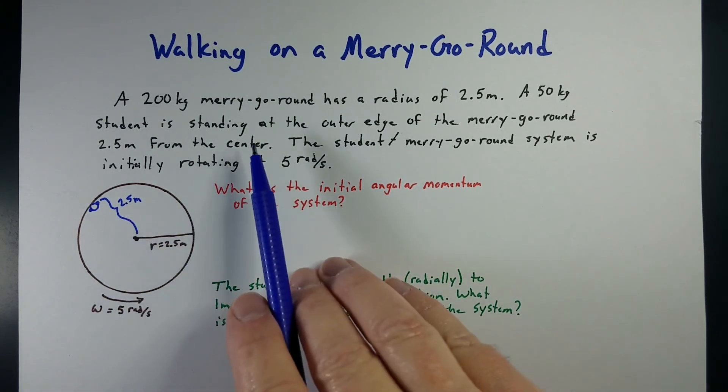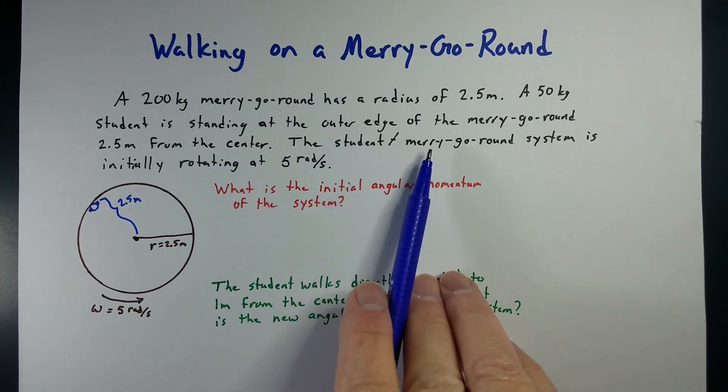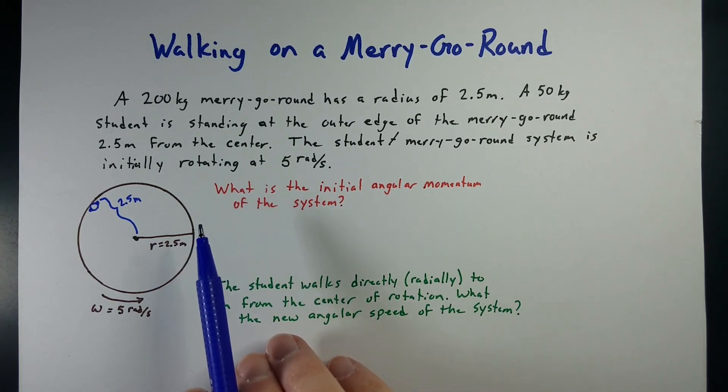So 2.5 meters from the center, and we want to first figure out if this system is rotating at five radians a second, what's the initial angular momentum of the system?